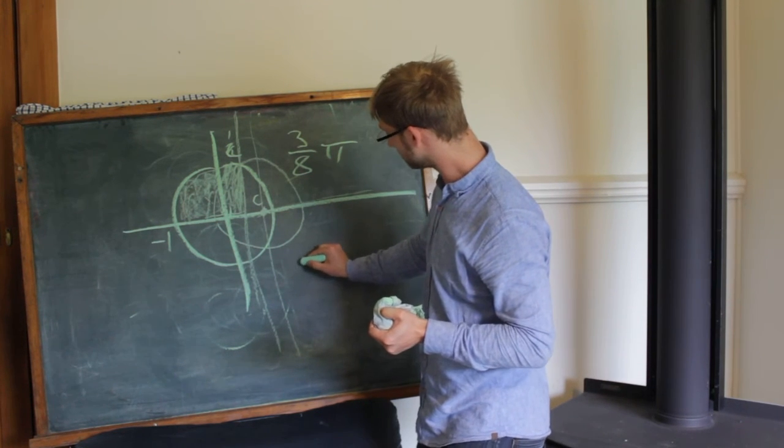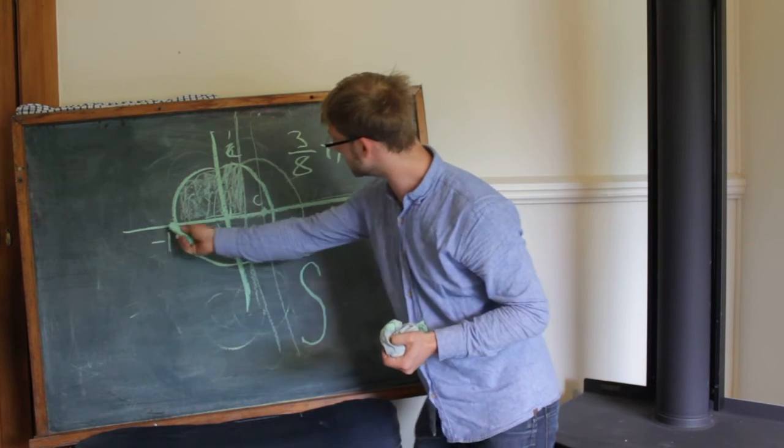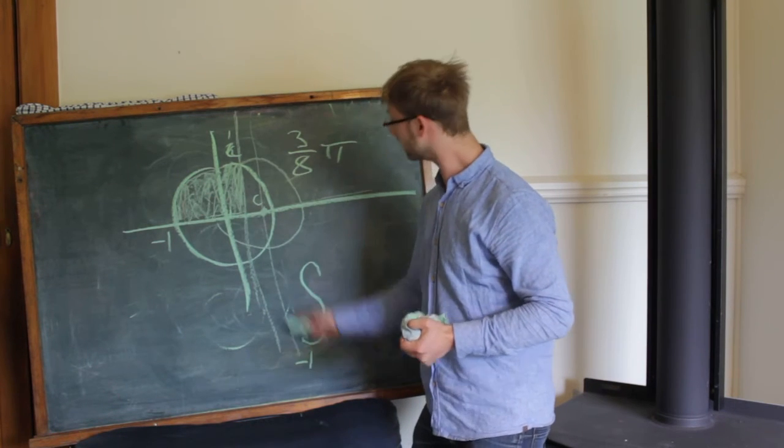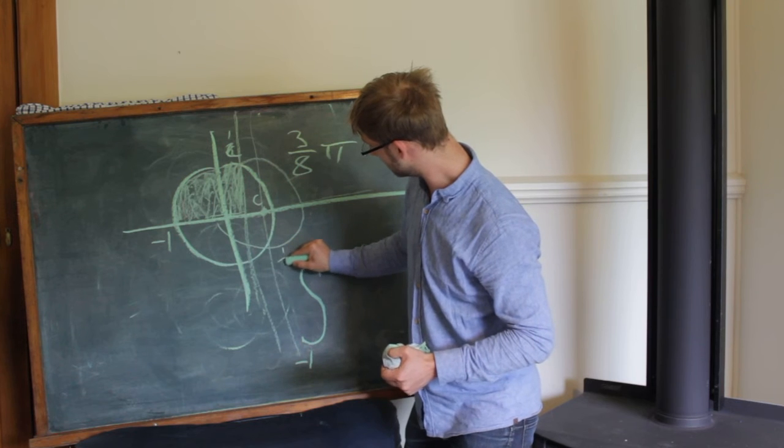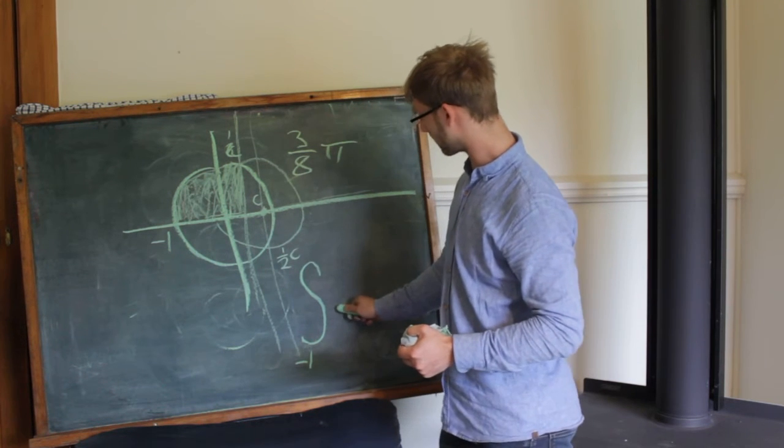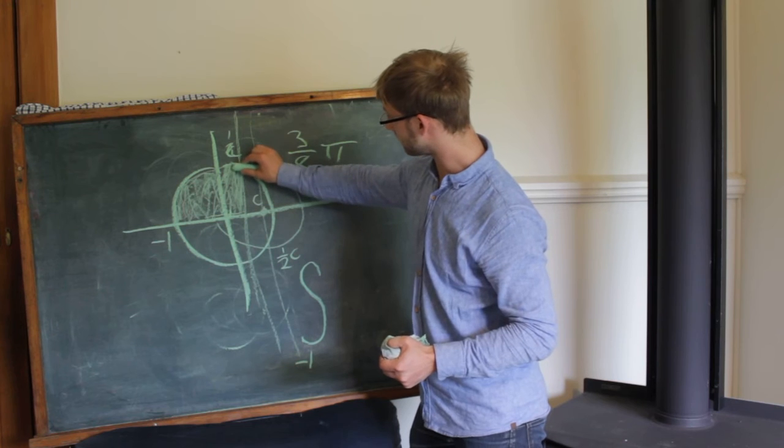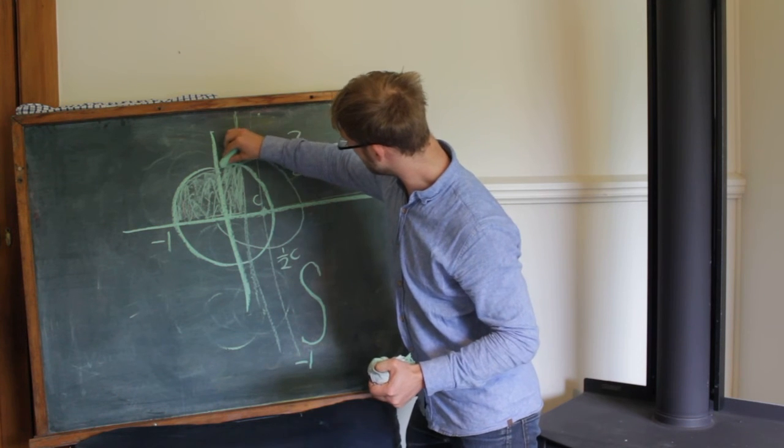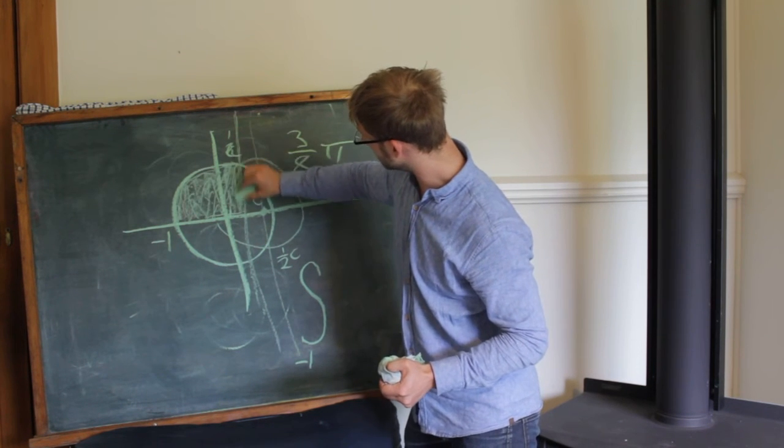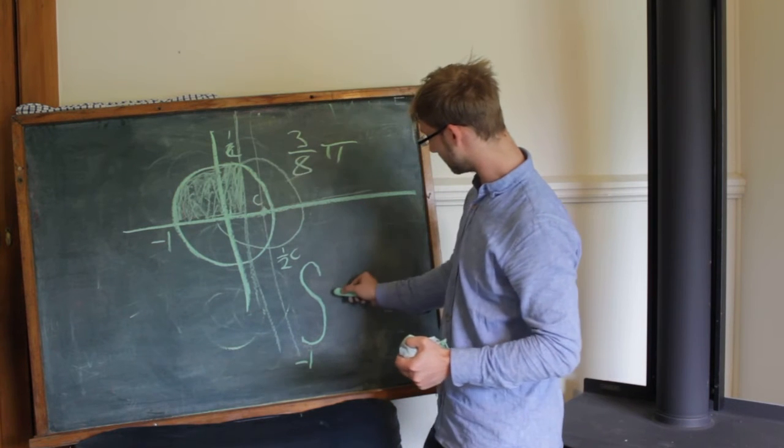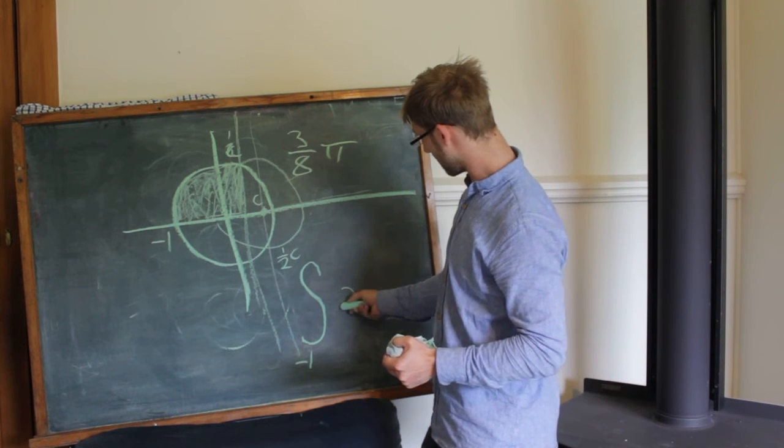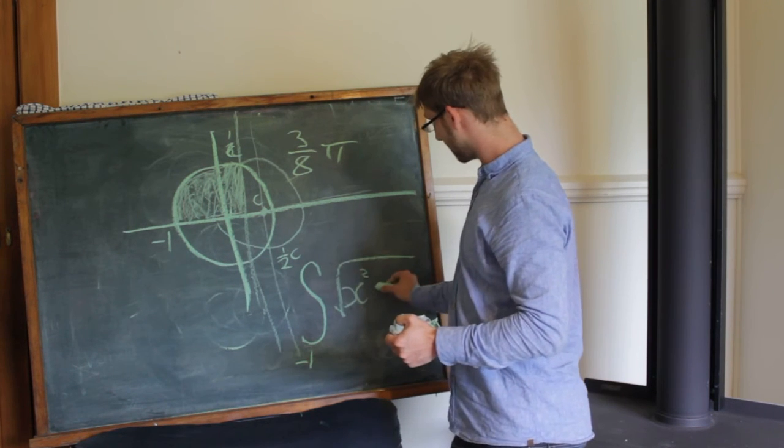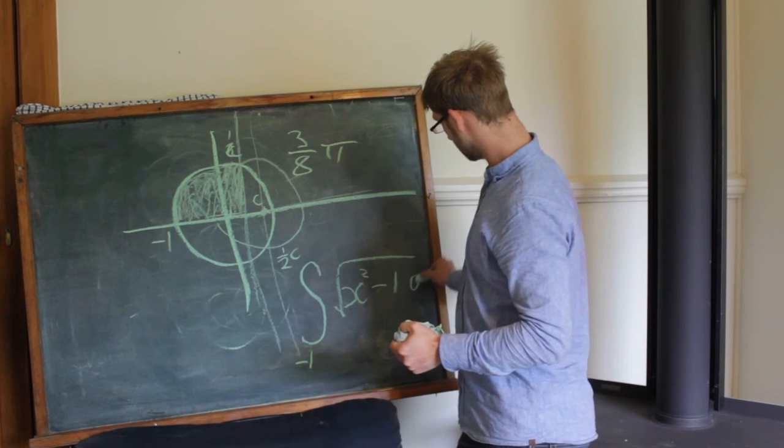But if the integration from the boundaries to find the area under the shape, the integration from negative one through to half of C of the equation of the circle, in this case would be the square root of one minus x squared minus one dx.